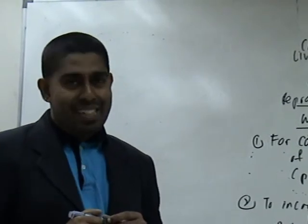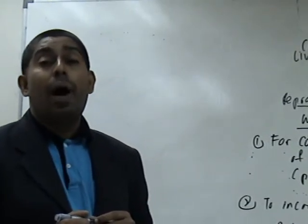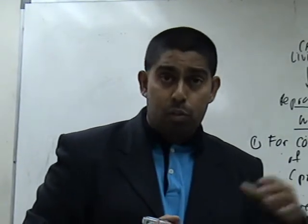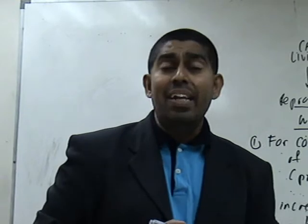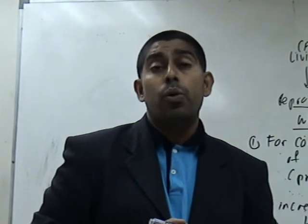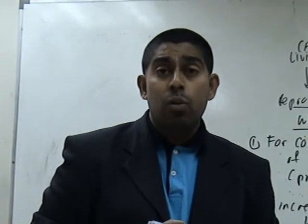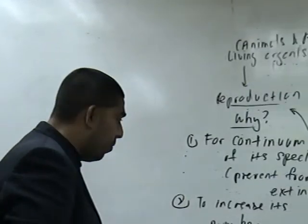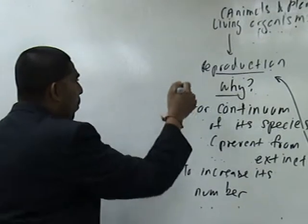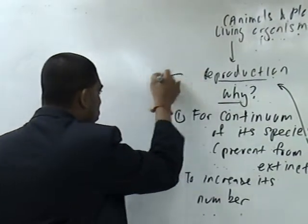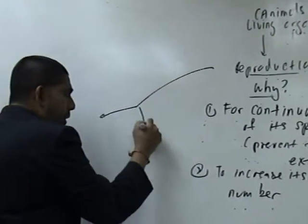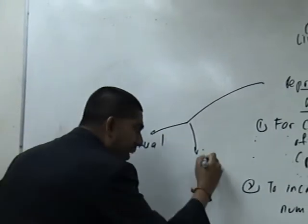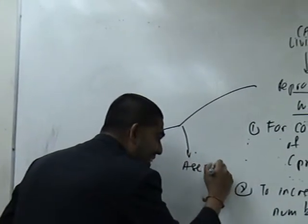So these are the two main reasons: number one, for it to continue its survival and continue its species — in other words, prevent it from becoming extinct; reason number two, to increase its numbers, perhaps to protect itself against predators. In the next video, you can look forward to me explaining two types of reproduction — sexual reproduction and asexual reproduction.